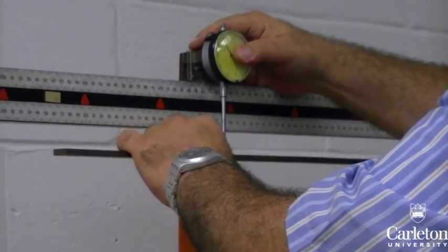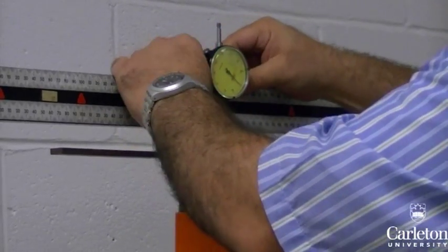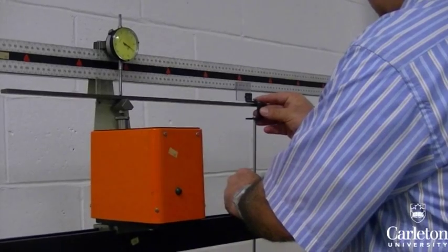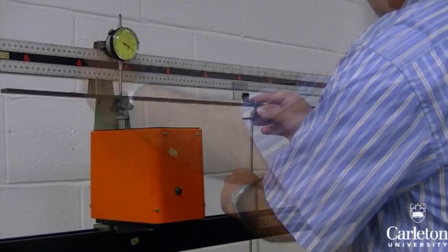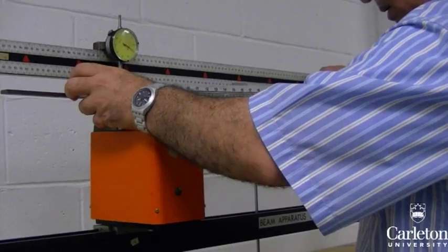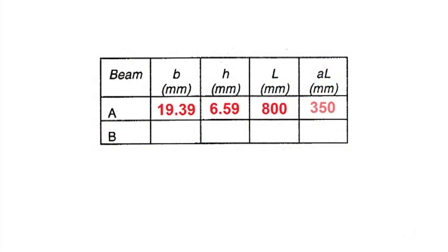Next, attach the displacement gauges by hooking them onto the top rail. Attach the hanger onto which the load is applied directly onto the beam. Move the hanger a certain distance from one end and record it. This distance is AL.